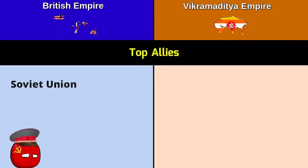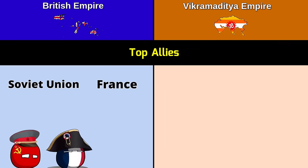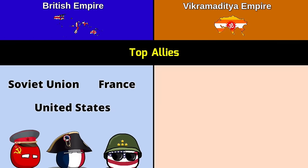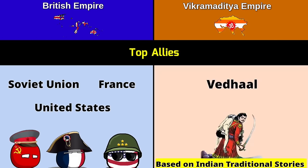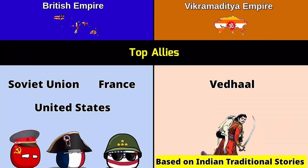Top allies: British Empire — Soviet Union, France, United States; Vikramaditya Empire — possibly Vedhal, based on Indian traditional stories.